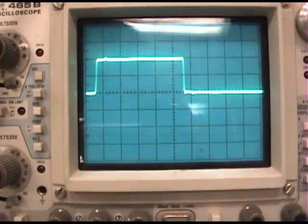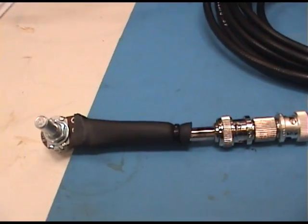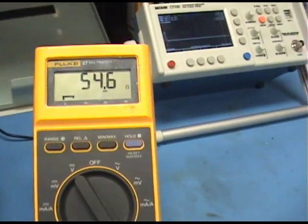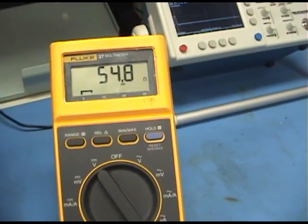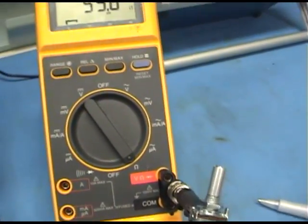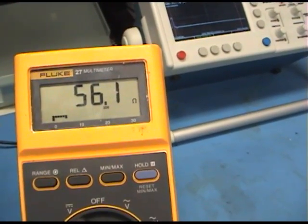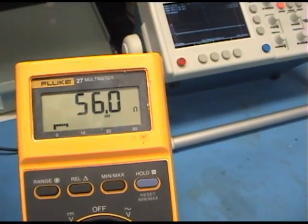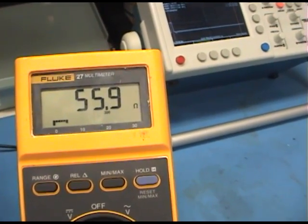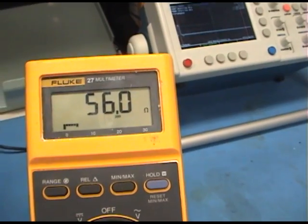You can basically take this potentiometer off and measure it on a multimeter. So, basically, I have this potentiometer on the multimeter and I'm reading about 56 ohms. And, that's pretty darn accurate. That gives you a good idea of the impedance of the cable.